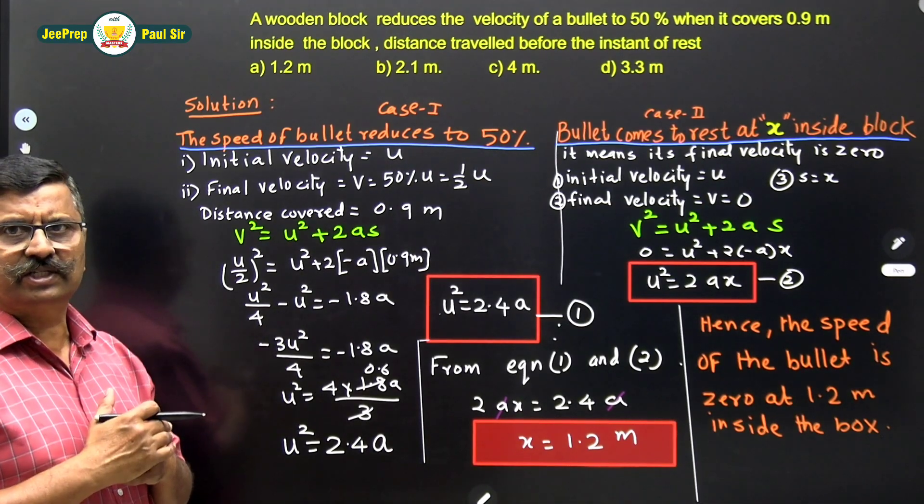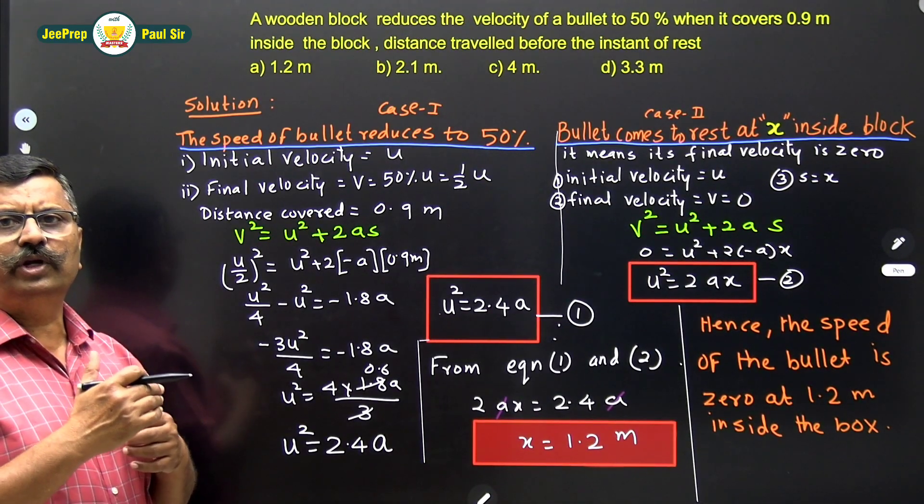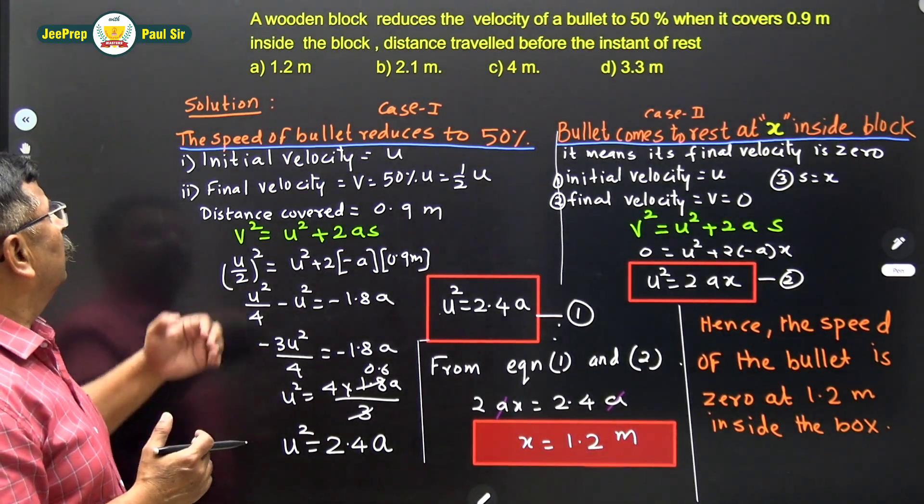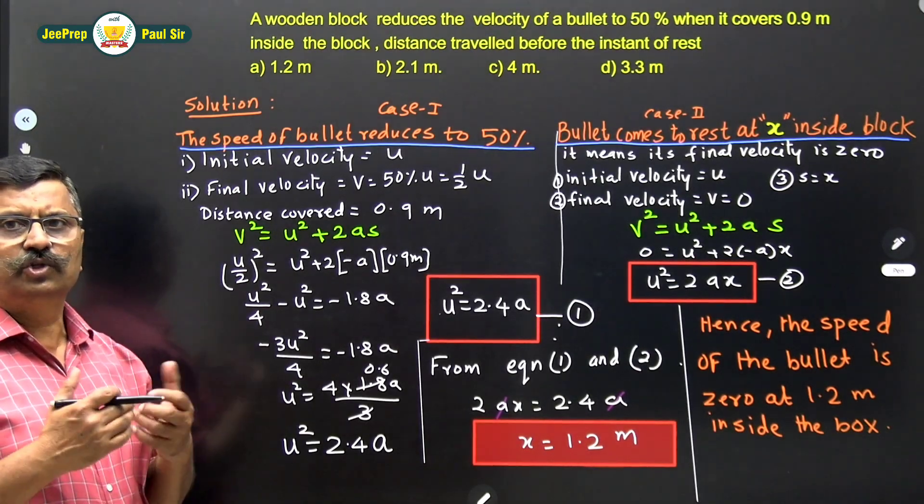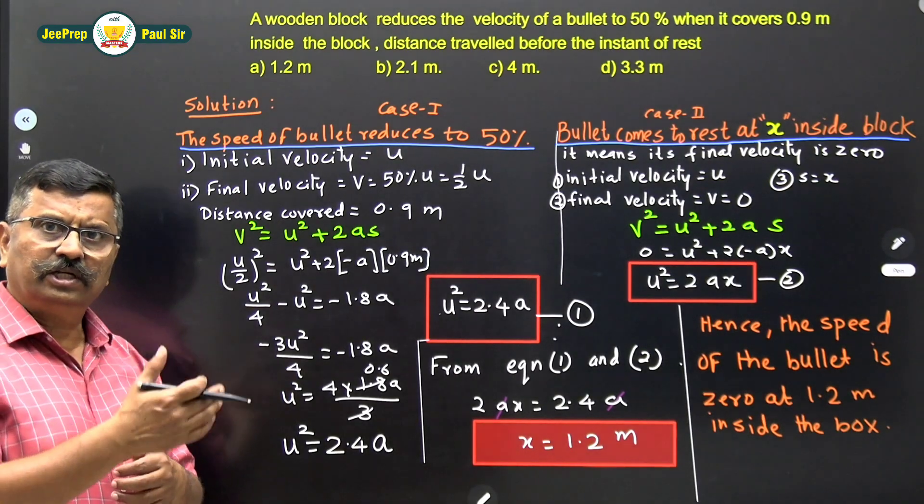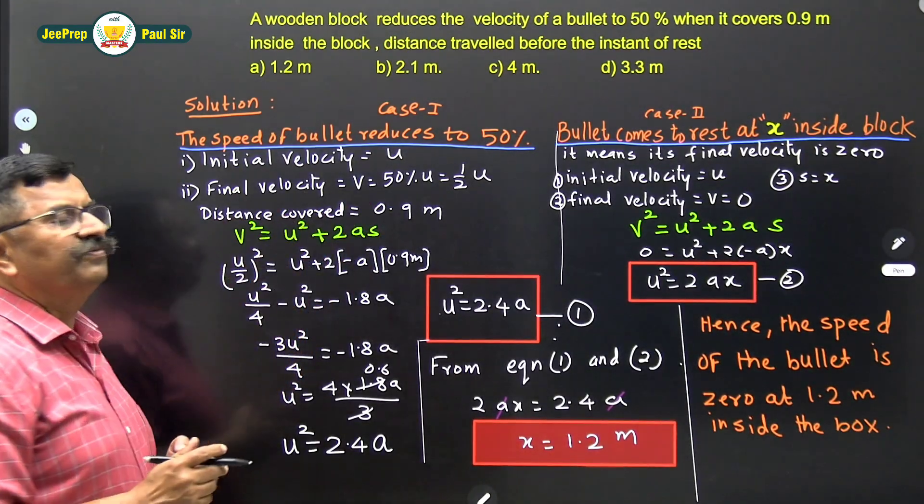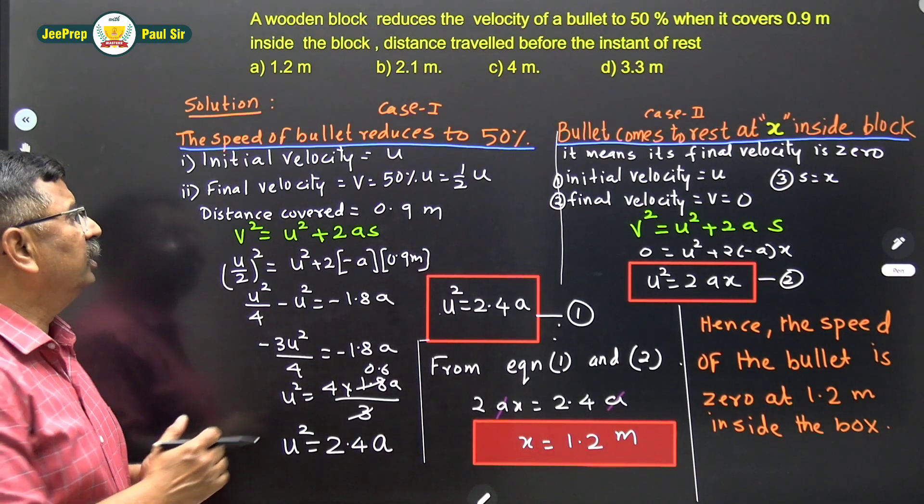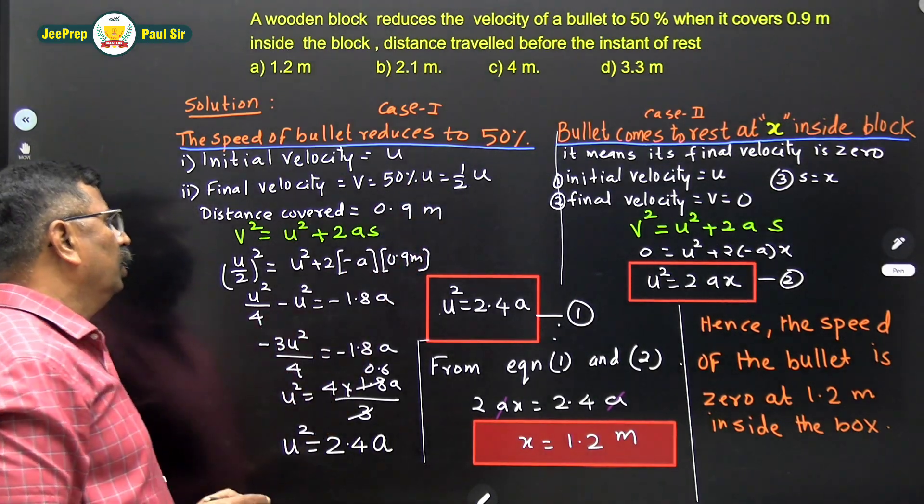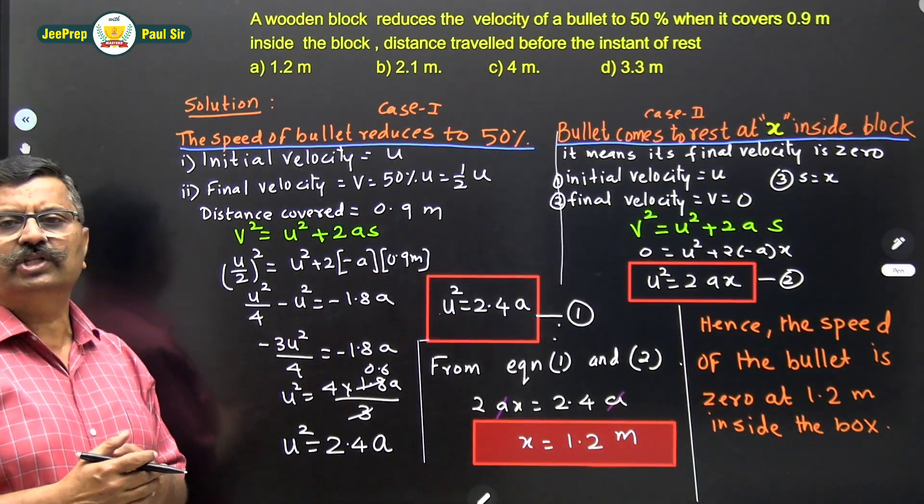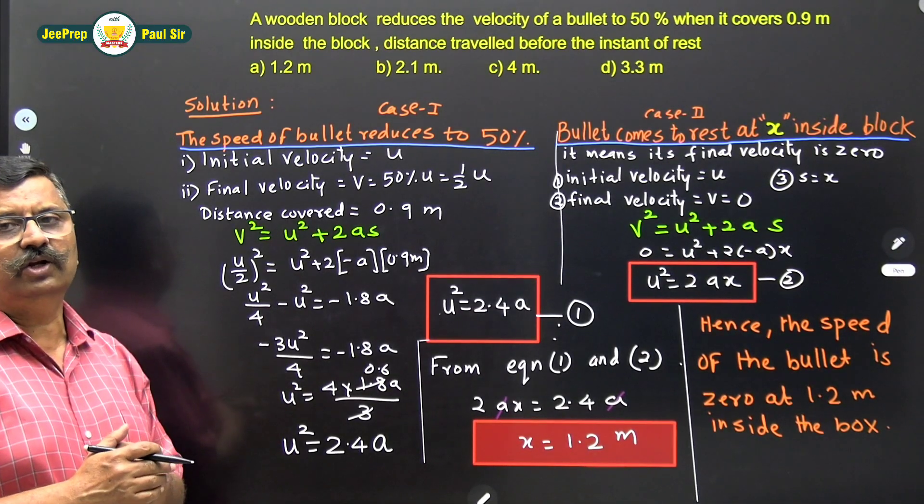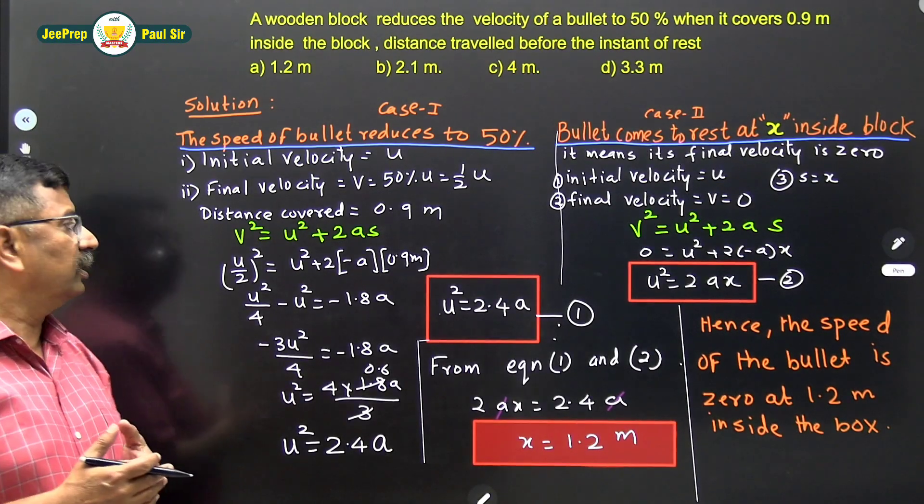But before that let us work out the first case that the speed of bullet reduces to 50% when it covers 0.9m distance. Now the initial velocity of the bullet is u. Then after covering 0.9m distance inside the wooden block, the final velocity becomes 50% of the initial velocity therefore 50% of u means 50 upon 100 that is 1 by 2 u. Now we will use this kinematical equation v square is equal to u square plus 2as. Here we will have to take a negative because it is deceleration, retardation.